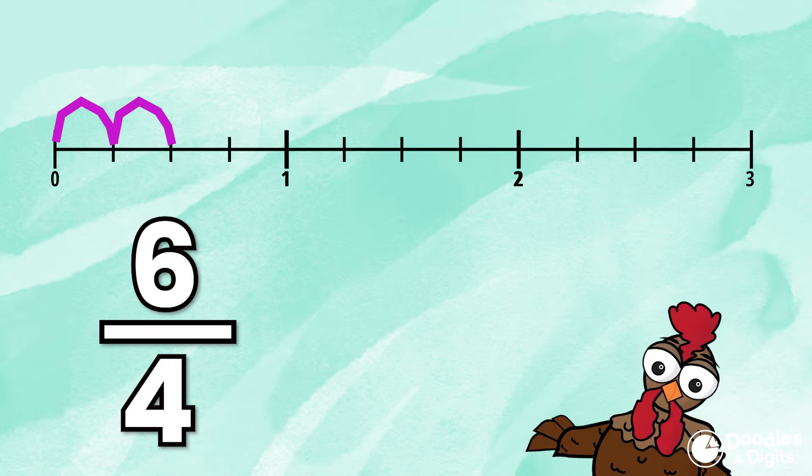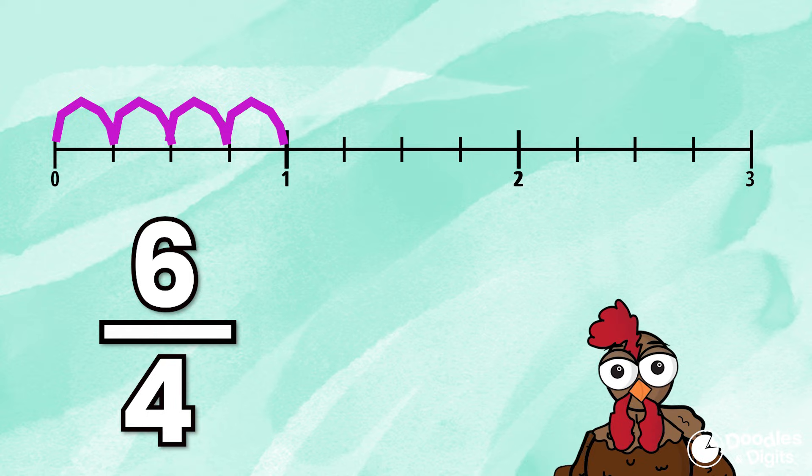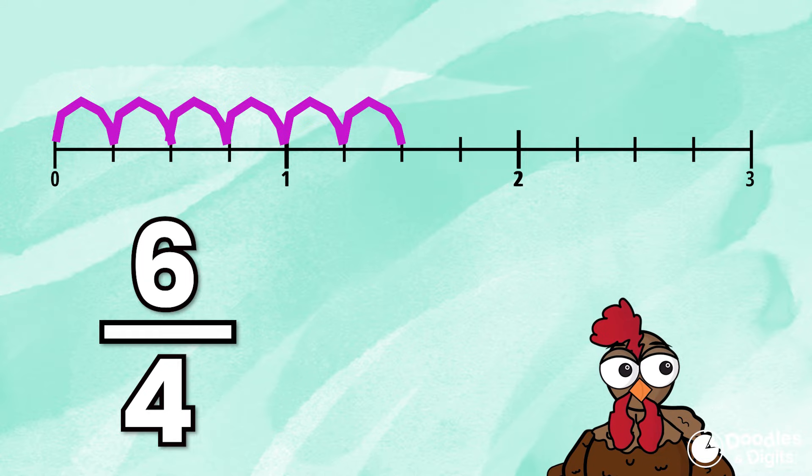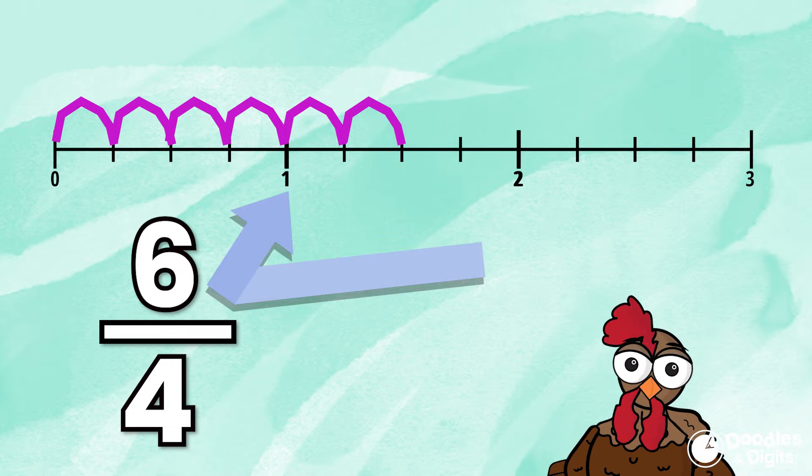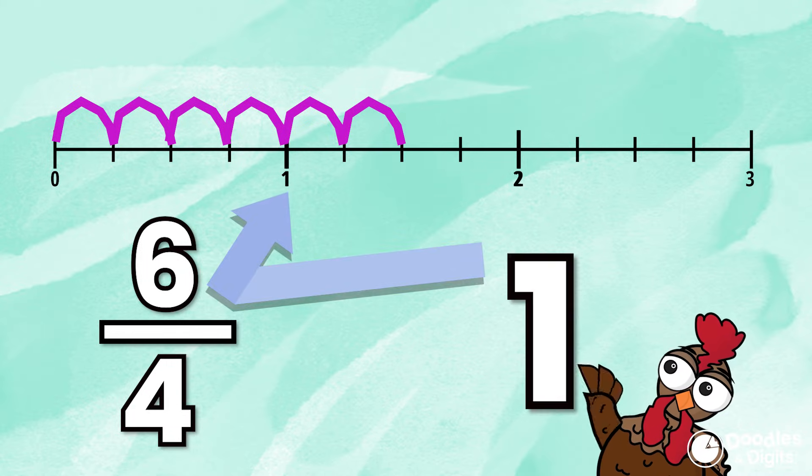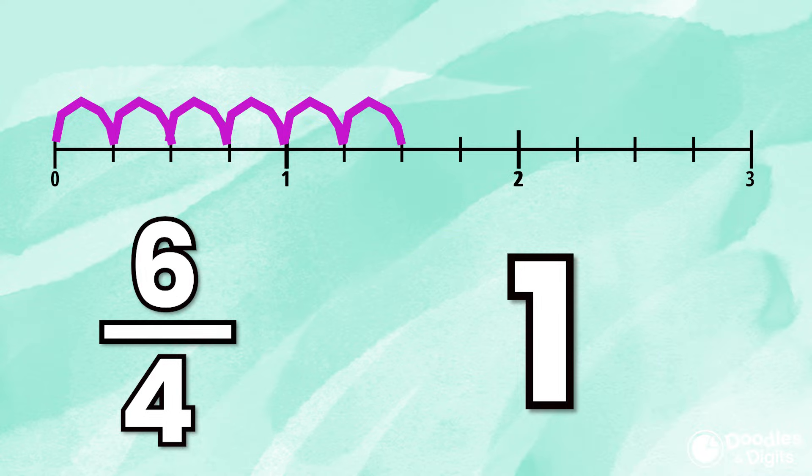Now we're going to jump six fourths. Now we can see that we went past one whole. So our whole number is going to be one. Now we have to look at what fraction we went past that one whole. We went past one whole by two fourths. So our mixed number is one and two fourths.